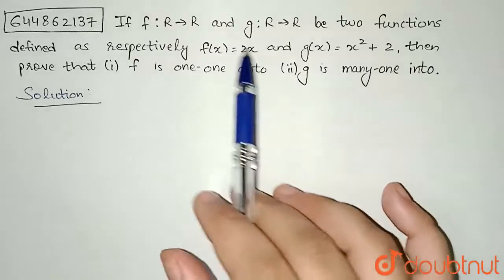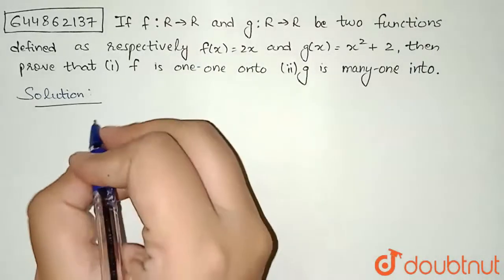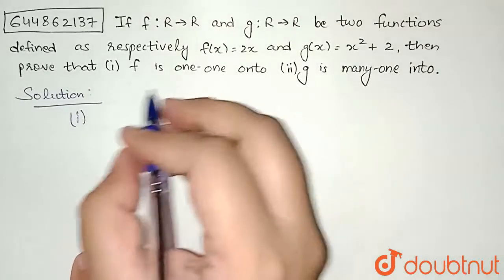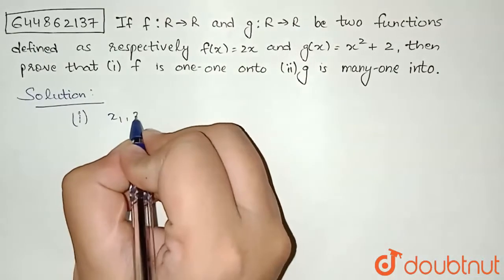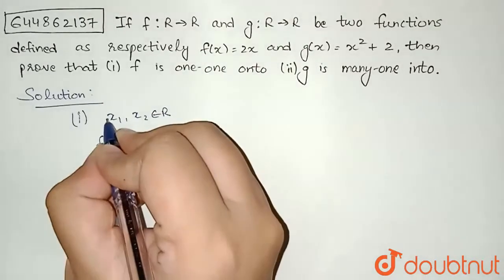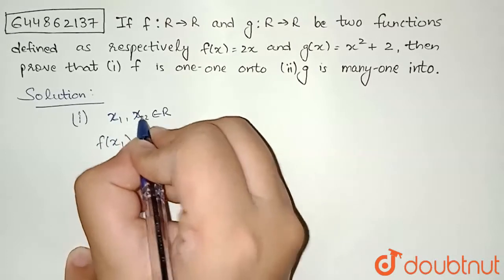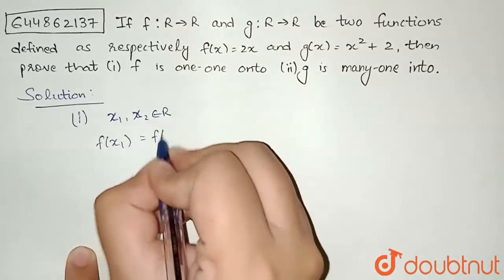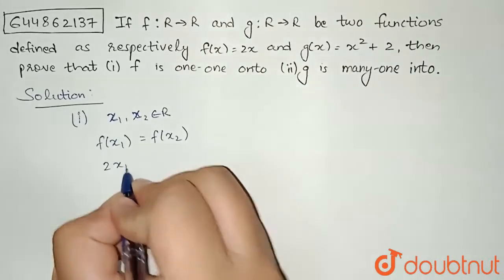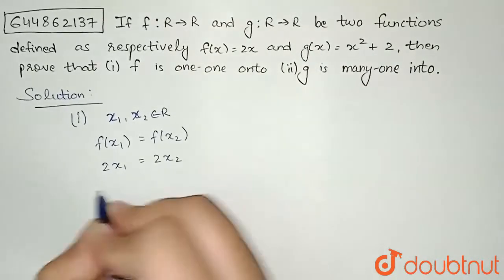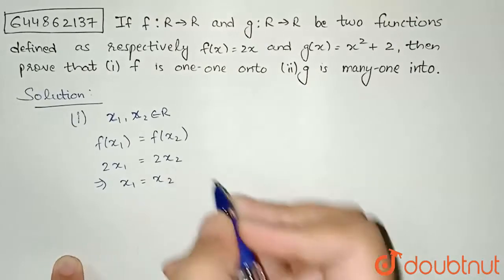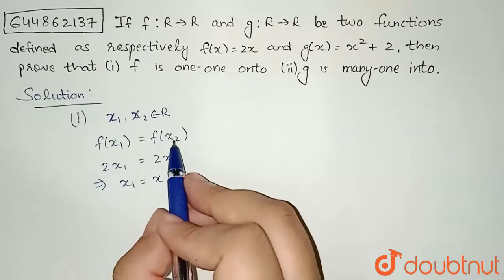Let us consider the first function, that is f(x). So we need to prove it is one-one, so we can take that x₁ and x₂ belongs to R. Now I can consider f(x₁) = f(x₂). For one-one we consider this only, so I can write 2x₁ = 2x₂, and this will imply x₁ = x₂. So I have taken f(x₁) = f(x₂) and we have derived x₁ = x₂, so my function f is one-one.